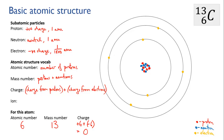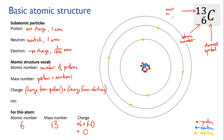Here's a shorthand way of summarising the information about an atom using its chemical symbol. You write the chemical symbol of the element you're talking about, and you put the atomic number as a subscript on the left, and the mass number as a superscript, also on the left.